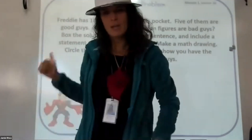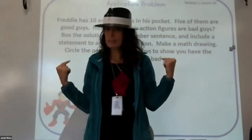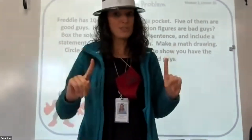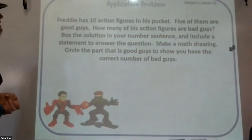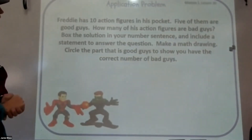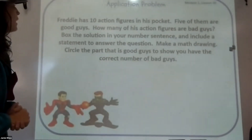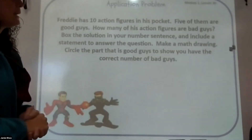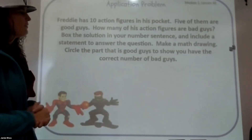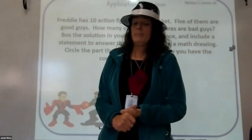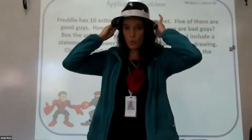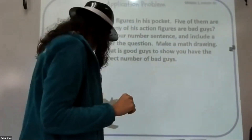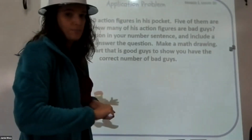Okay, you should be done with your fluency, so now it's time to become detectives. We have a new case to solve — this one has lots of different things it's asking us to do, so let's read through it first to make sure we know everything before looking for clues. Let's read: Freddy has 10 action figures in his pocket. Five of them are good guys. How many of his action figures are bad guys? Box the solution in your number sentence, include a statement to answer the question, make a math drawing, and circle the part that is good guys to show you have the correct number of bad guys.